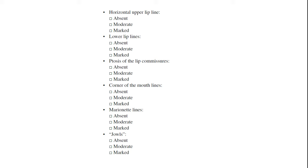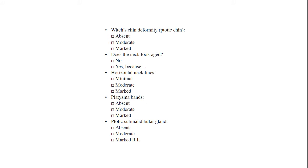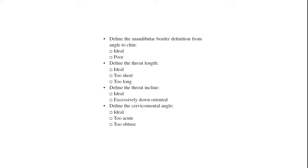Jowls: absent, moderate, or marked. Witch's chin deformity: absent, moderate, or marked. Does the neck look aged — no or yes, because? Horizontal neck lines: minimal, moderate, or marked. Platysma bands: absent, moderate, or marked. Ptosis of the mandibular gland: absent, moderate, or marked — whether left or right. Define the mandibular border definition from angle to chin: ideal or poor. Define the throat length: ideal, too short, or too long. Define the throat incline: ideal or excessively down-oriented. The cervical-mental angle: ideal, too acute, or too obtuse.